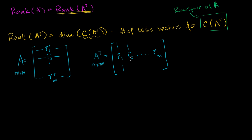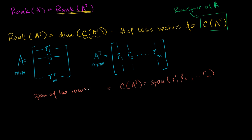The column space of A transpose is equal to the span of R1, R2, all the way to Rm. It's equal to the span of these column vectors, or equivalently the span of the rows of A — that's why it's called the row space. So the column space of A transpose equals the span of the rows of A, and these two things are equivalent.